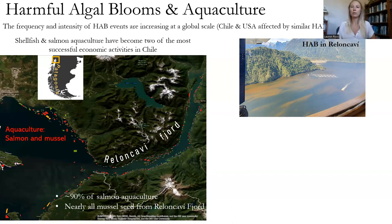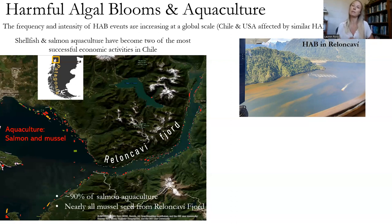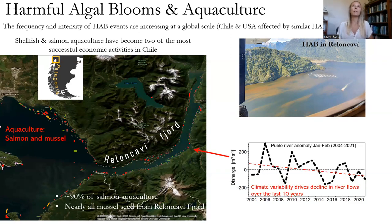There have been really large mass mortalities of salmon due to harmful algal blooms. Shellfish aquaculture — mussels — do not feature these mass mortalities, but rather the shellfish ingest the harmful algae and retain the toxins. If that meat is ingested by a human, it could be potentially fatal or cause serious effects. So this is a big issue in this region. It is thought that climate variability is driving a decline in river flow that is exacerbating these harmful algal blooms — this is one theory.